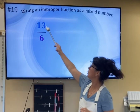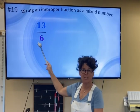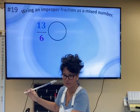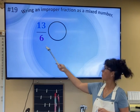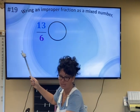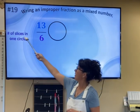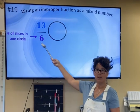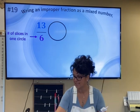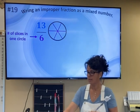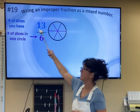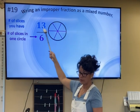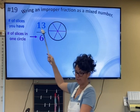An improper fraction has a numerator larger than the denominator, and we want to turn this into a mixed number. So let's start off by drawing a picture of what we have. I have a circle here, and the number of slices in just one circle is going to be the denominator. So we need to put in six slices. The numerator is how many slices we actually have, so we have 13 slices.